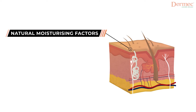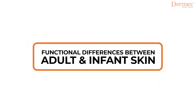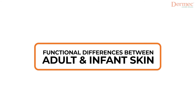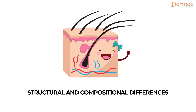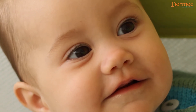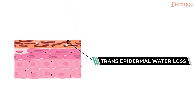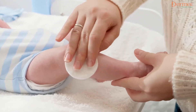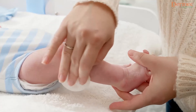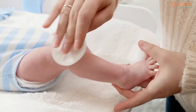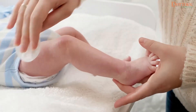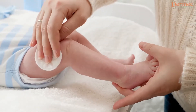Now let's talk about the functional differences between the adult and the baby's skin. Due to the structural and compositional differences, the baby skin functions in a slightly different way. The trans-epidermal water loss is higher in babies than that of an adult — in simple terms, the baby skin loses more water than the adult skin, hence the baby skin is more prone to dryness.